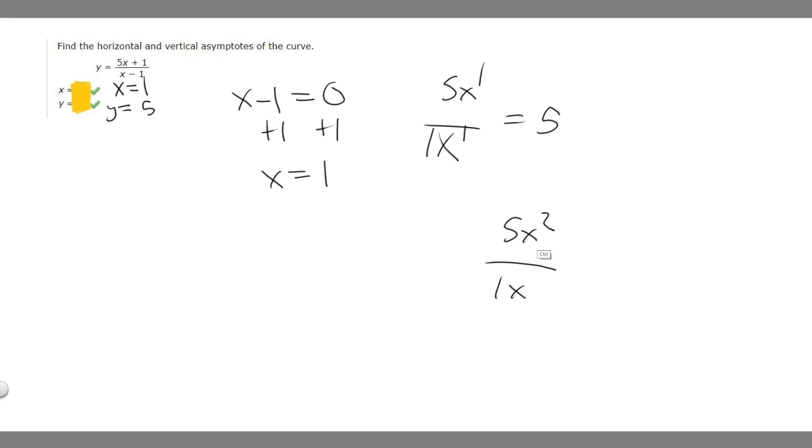But let's say in a different case the bottom was bigger. Let's say we have 5x over x squared. If the degree of the bottom one is bigger, that means it equals 0. The horizontal asymptote is equal to 0.